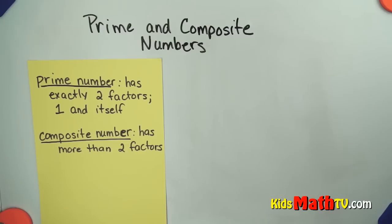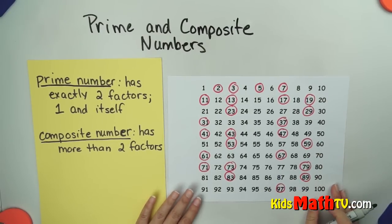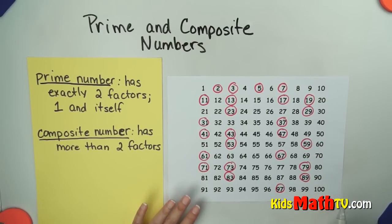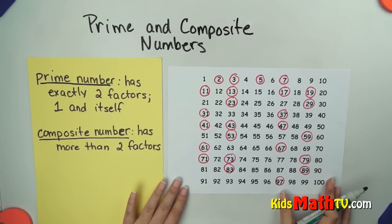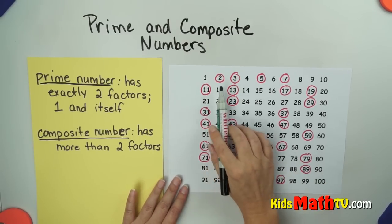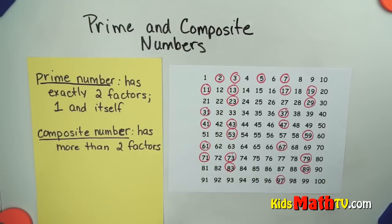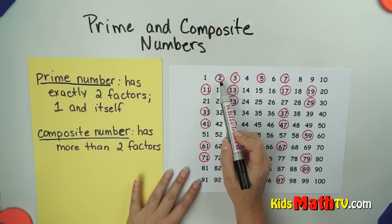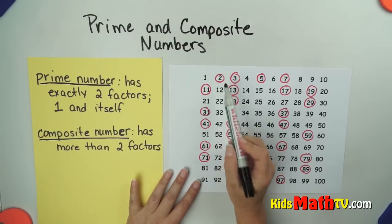We have a list here of the numbers 1 through 100, and I have circled all of the prime numbers. The prime numbers are the ones that are circled, and they only have two factors, one and itself. So the only way you can get two is by multiplying one times two.